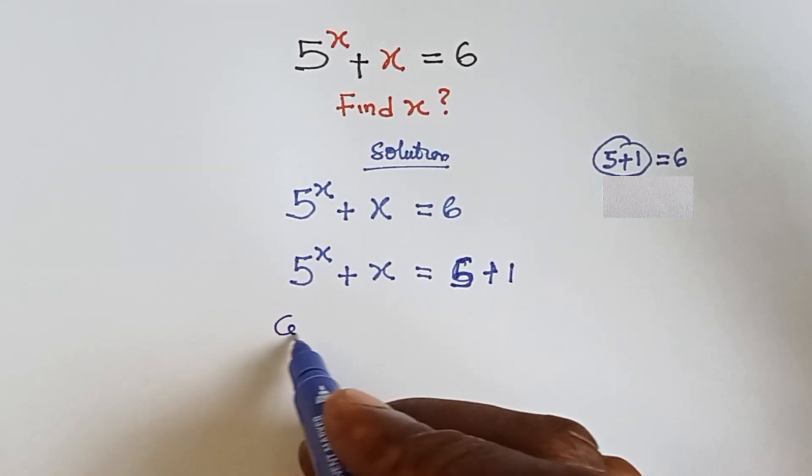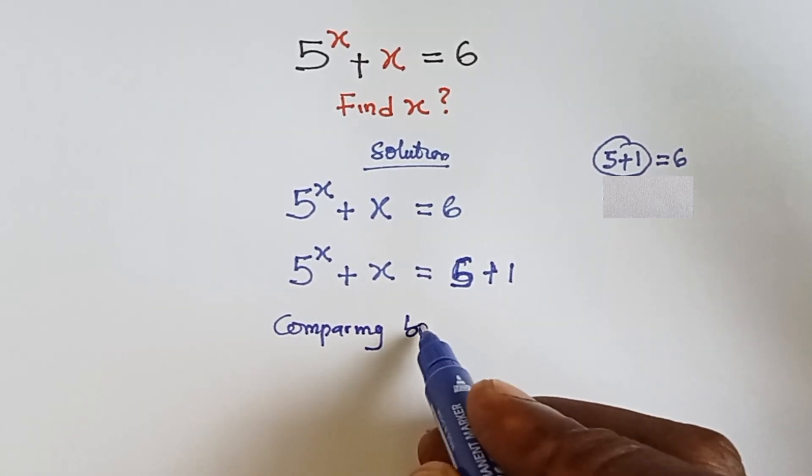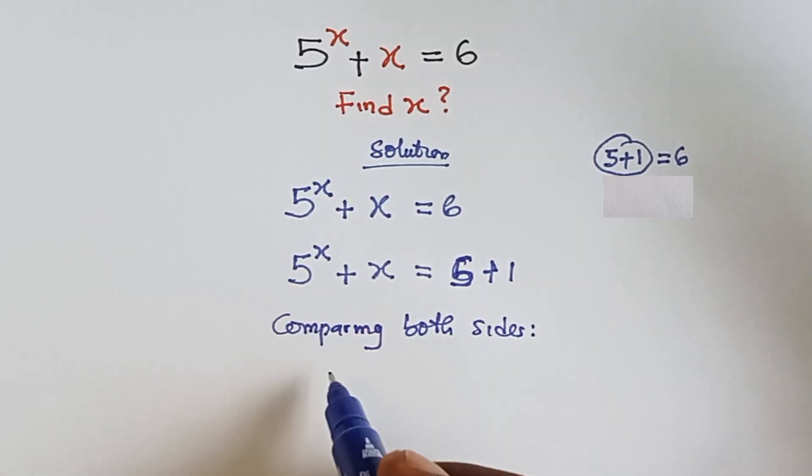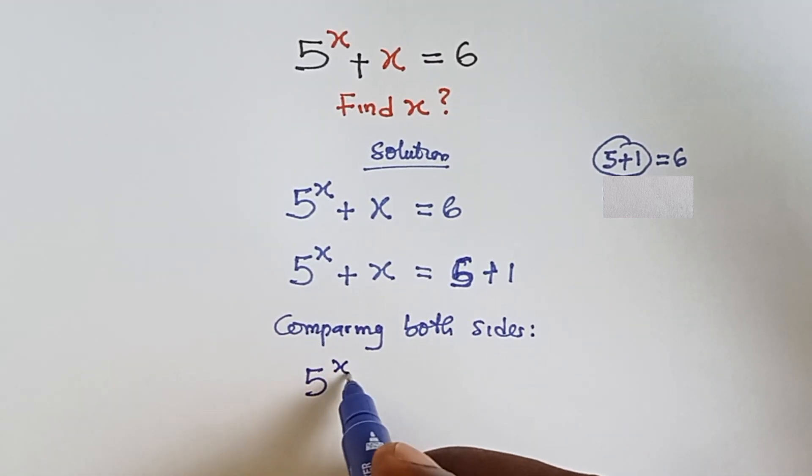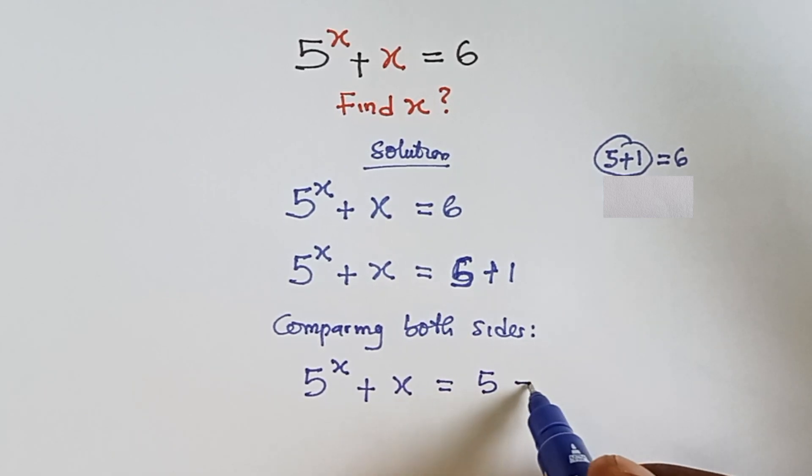All right, so now we can compare both sides, comparing both sides. This means we have 5 raised to the power x plus x equals to 5 plus 1.